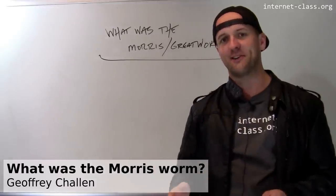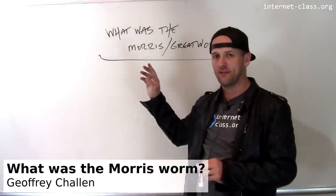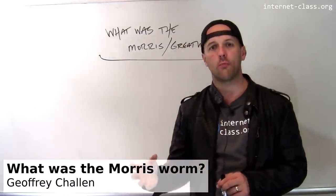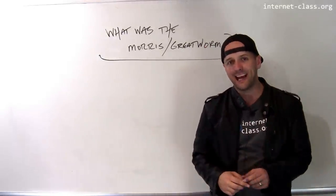A fun bit of early internet history that's routing related concerns something known as the Morris worm, or also the great worm. This is November of 1988.